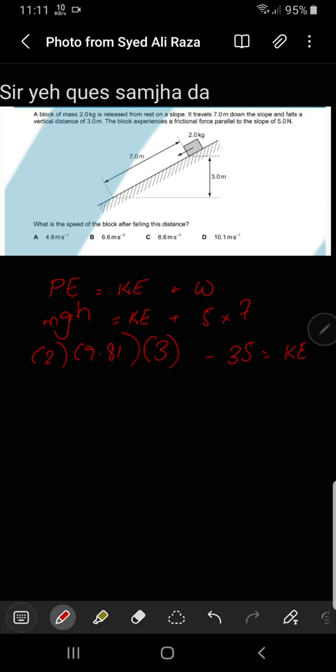2 times 9.8 times 3, that is 58.86 minus 35, so it becomes 23.86. The remaining kinetic energy is 23.86 joules.